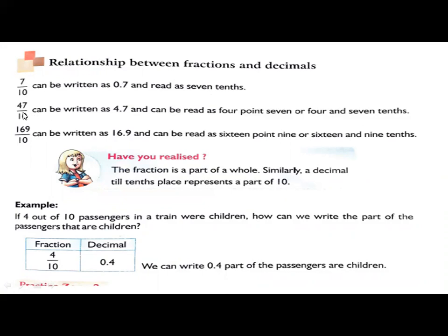47 by 10, so by 10th, we make a decimal point from the right side. 4.7 which can be written as 4.7 or 4 and 7 tenths.